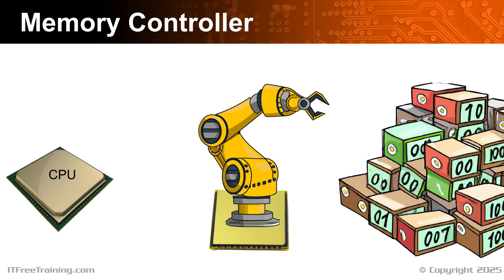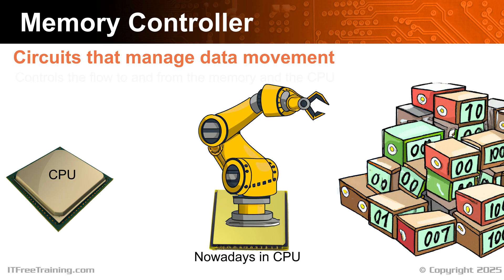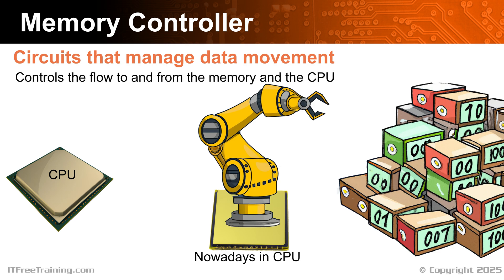Let's now have a look at how the CPU gets this information. In order to get data to and from the CPU, a memory controller is used. In the old days, the memory controller was a separate chip on the motherboard. Nowadays, the memory controller is part of the CPU. However, its purpose remains the same — it consists of circuits that manage data movements, which essentially controls the flow of data to and from the CPU.